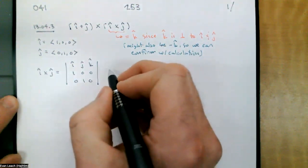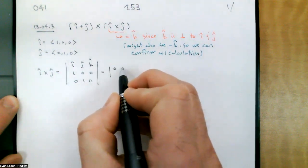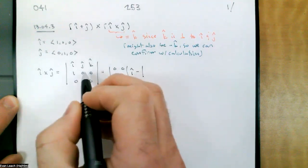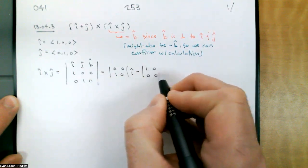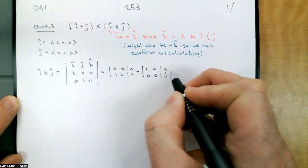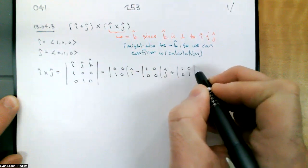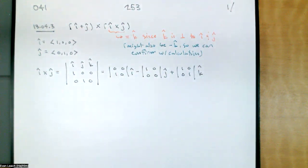The i cofactor is the 2×2 matrix with entries 0, 0, 1, 0 by rows. Minus the j cofactor, which is 1, 0, 0, 0. And the k cofactor is 1, 0, 0, 1 — that's just an identity matrix, equal to its own transpose. So (1, 0, 0, 1) by rows or by columns.